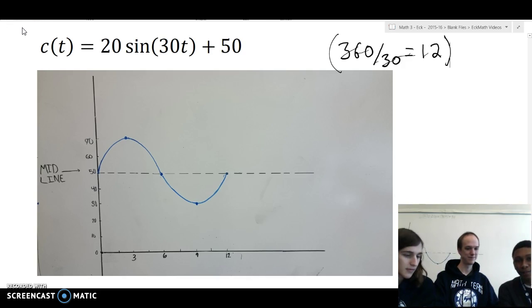So, the first thing we did to solve this problem was use the b-value, which is 30, and use that to divide 360 by 30. And we found the period, which was 12, using that.